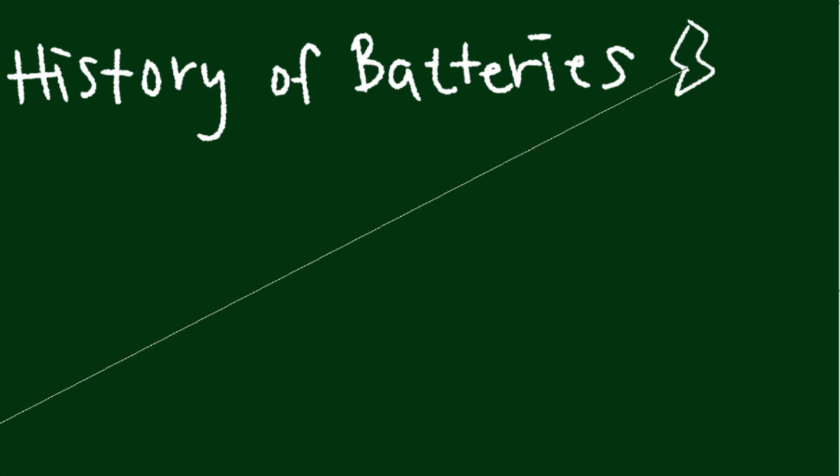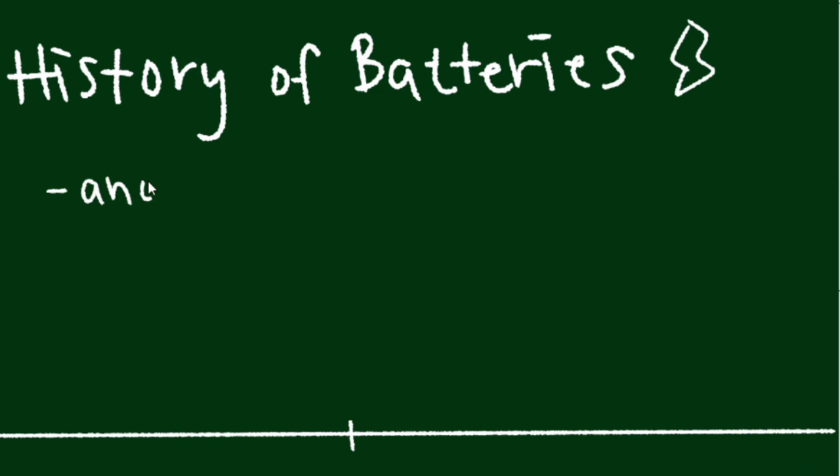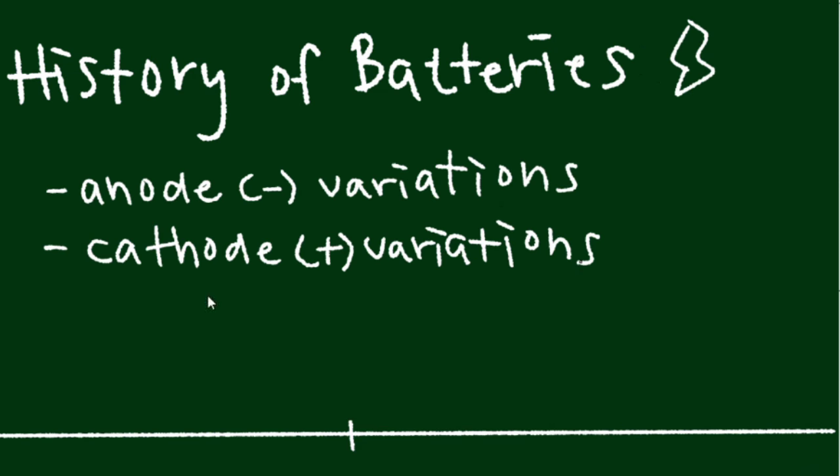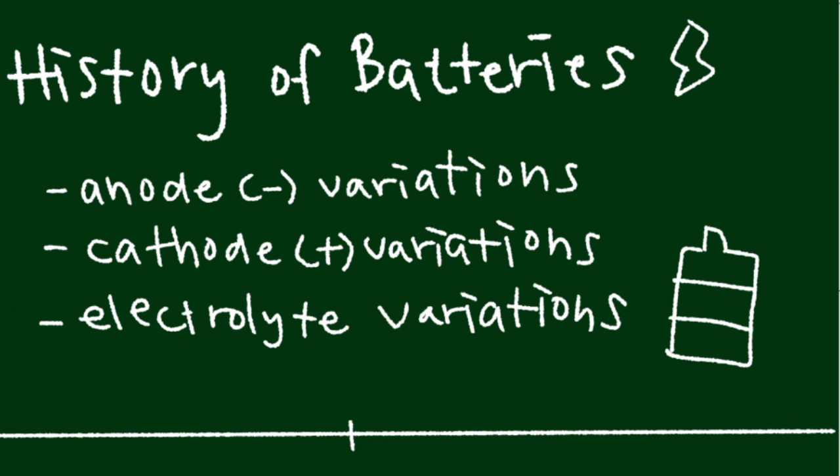The different types of batteries that have emerged throughout history are caused by the variation in metals and solutions that have been used as the anode, cathode, and electrolyte. Let's take the first battery ever created as an example.